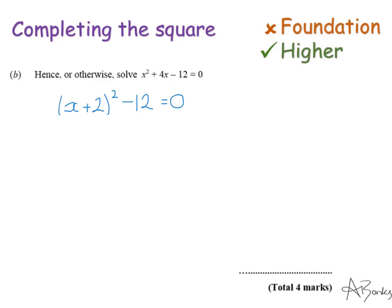The first step is I'm going to add 12 to both sides to get rid of this 12 on the end. I'm trying to isolate x and find out what x is. I'll be left with x plus 2 squared equals 12.